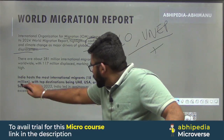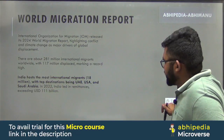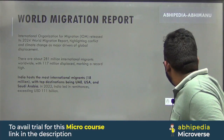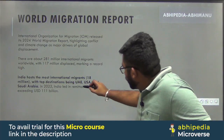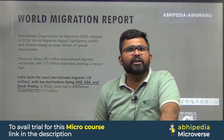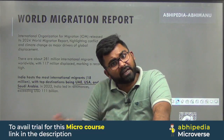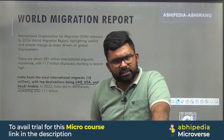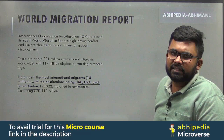India hosts the most international migrants — that means the maximum number of migrants, 80 million. The top destinations for Indian migrants are UAE, USA, and Saudi Arabia. In the UAE, less than 30% is the native population and the rest are migrants, making it the top destination. Second is USA and third is Saudi Arabia.